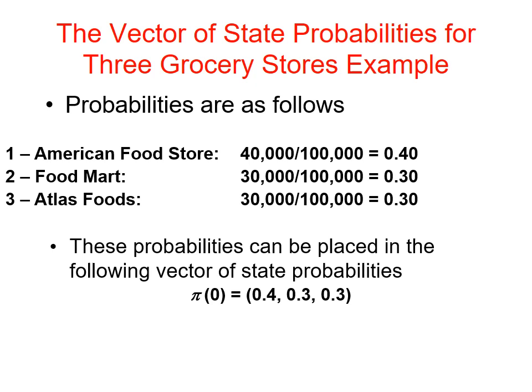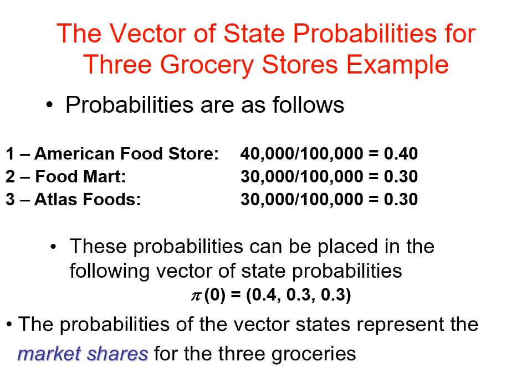Vector 0, the current state, equals 0.4 for American Food Store, 0.3 for Food Mart, and 0.3 for Atlas Food. The sum of the three groceries' market shares must equal one. The probability of the state vector represents the market share for the three groceries.